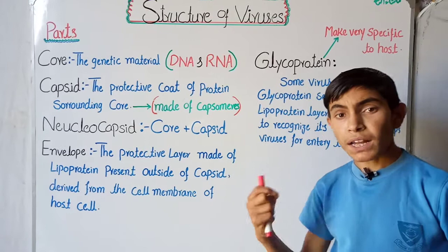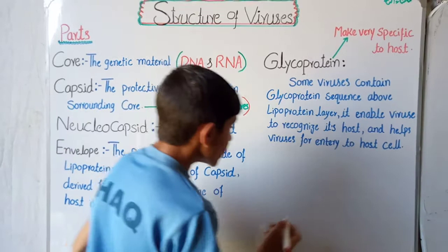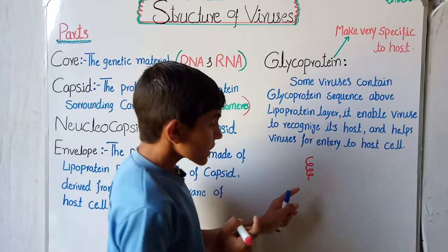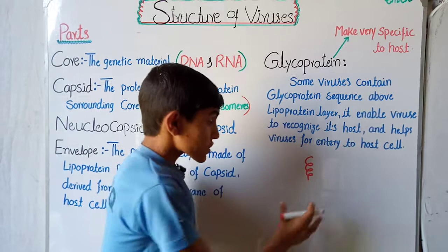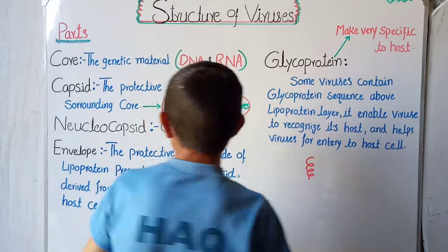This part is called the genetic material or the core of the virus. It may be DNA or RNA, but not both. A single virus contains DNA or RNA but not both. The second part is the capsid — the protective protein coat surrounding the core.